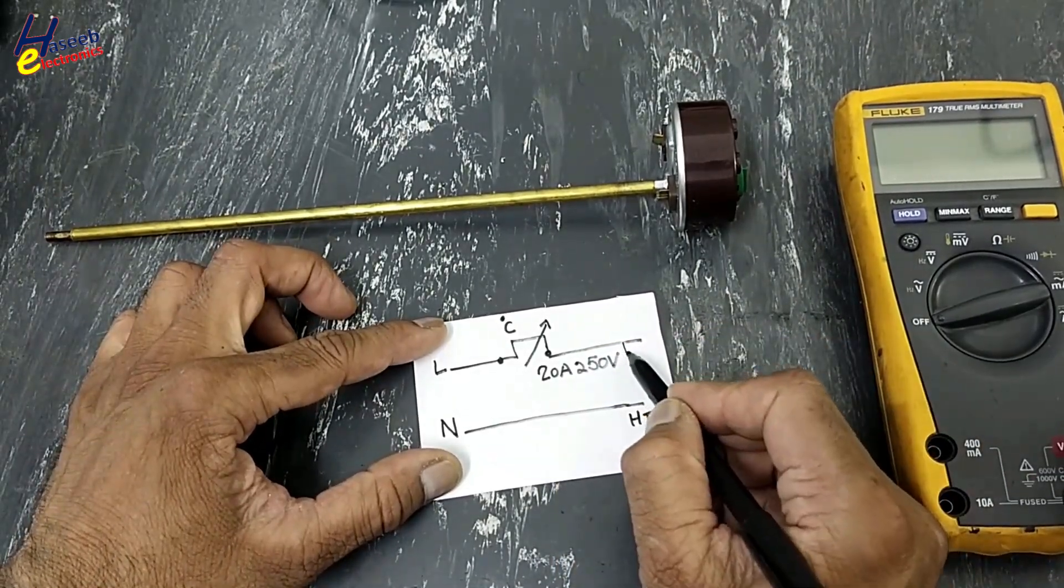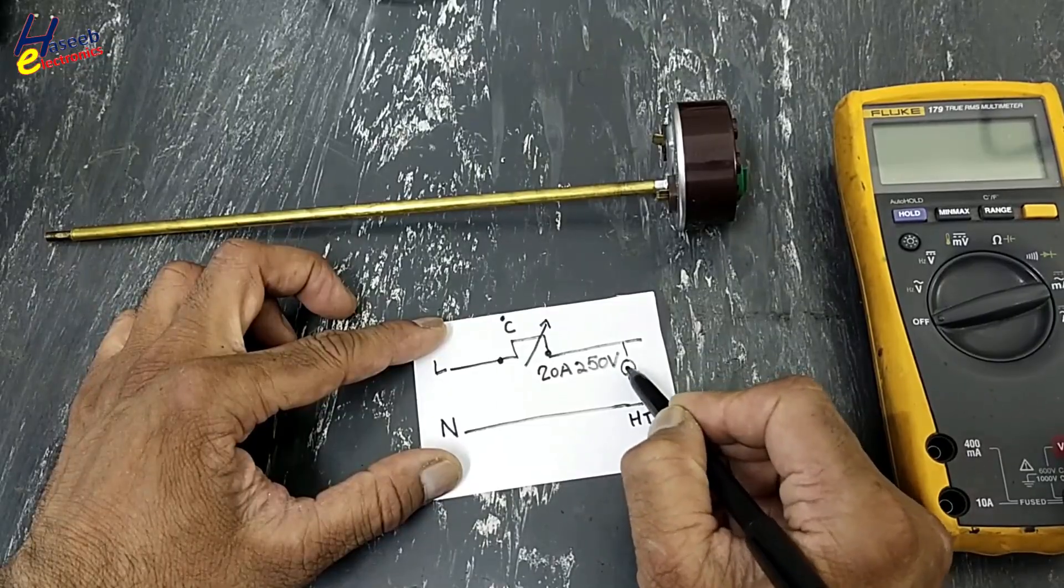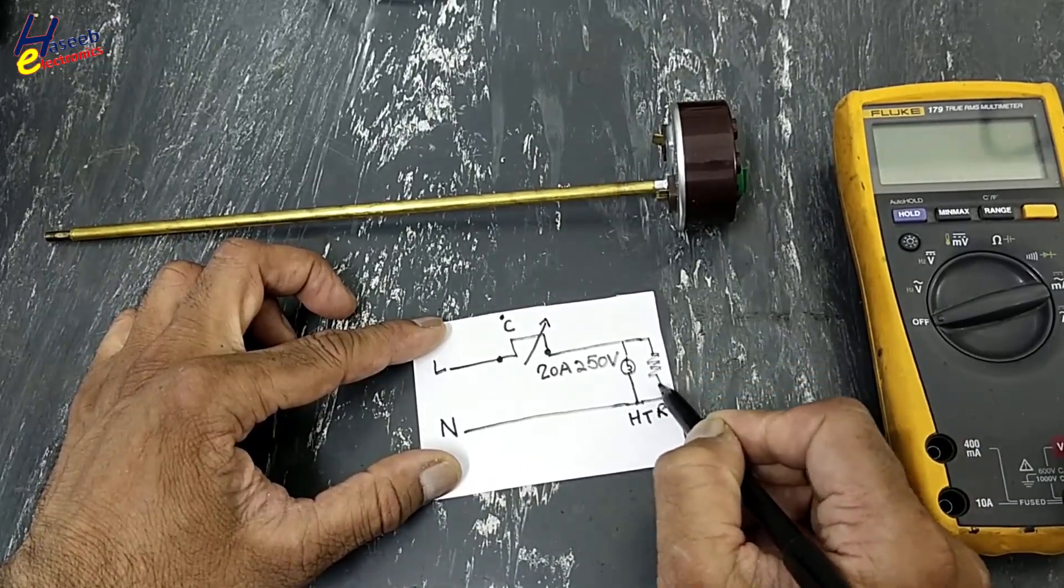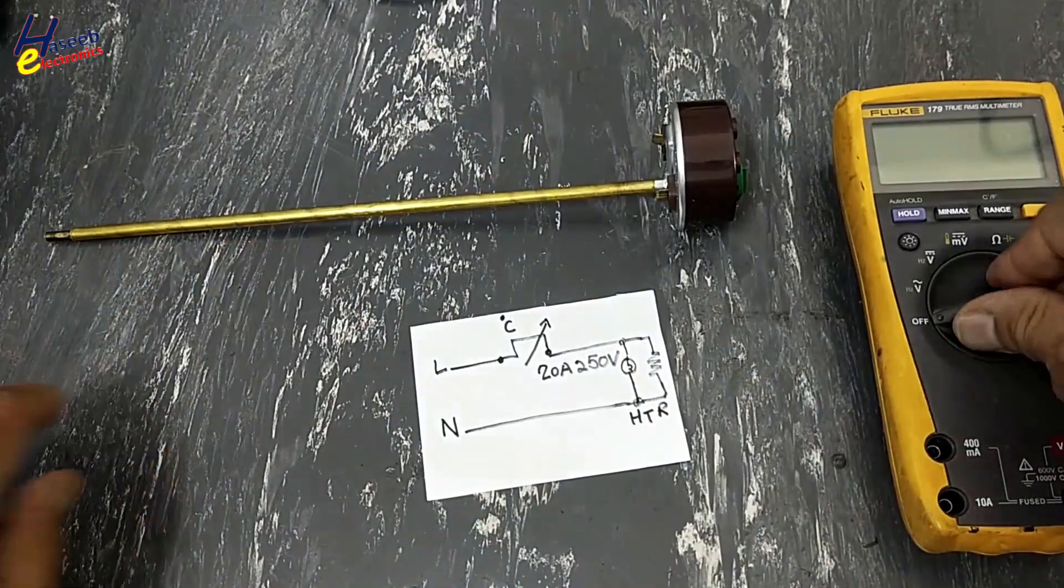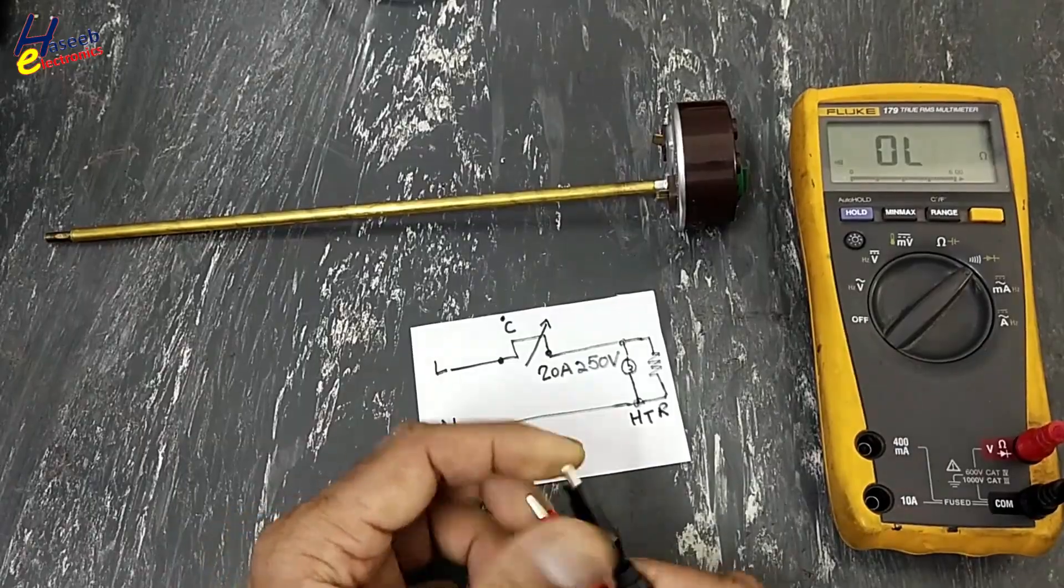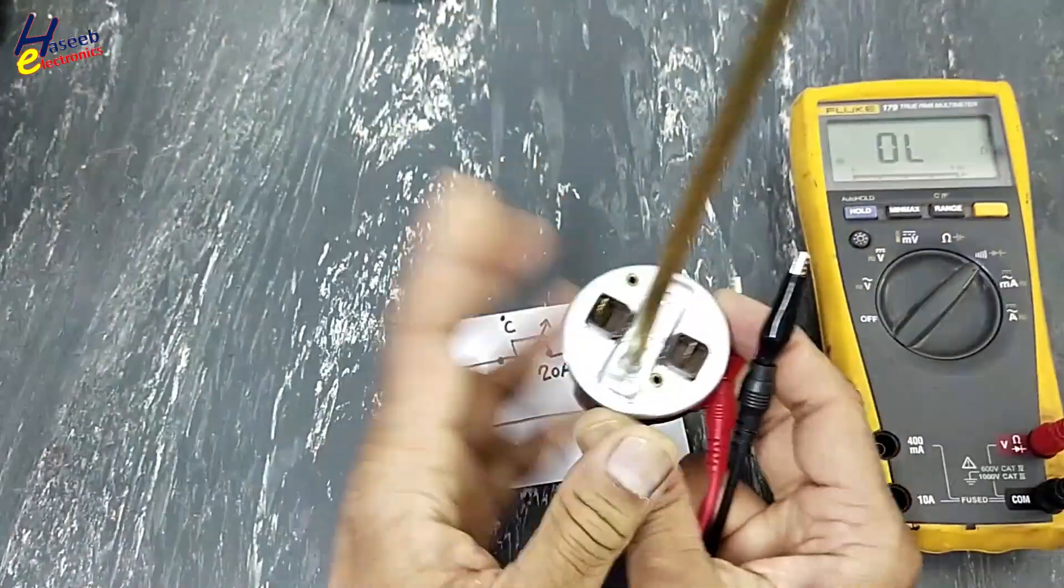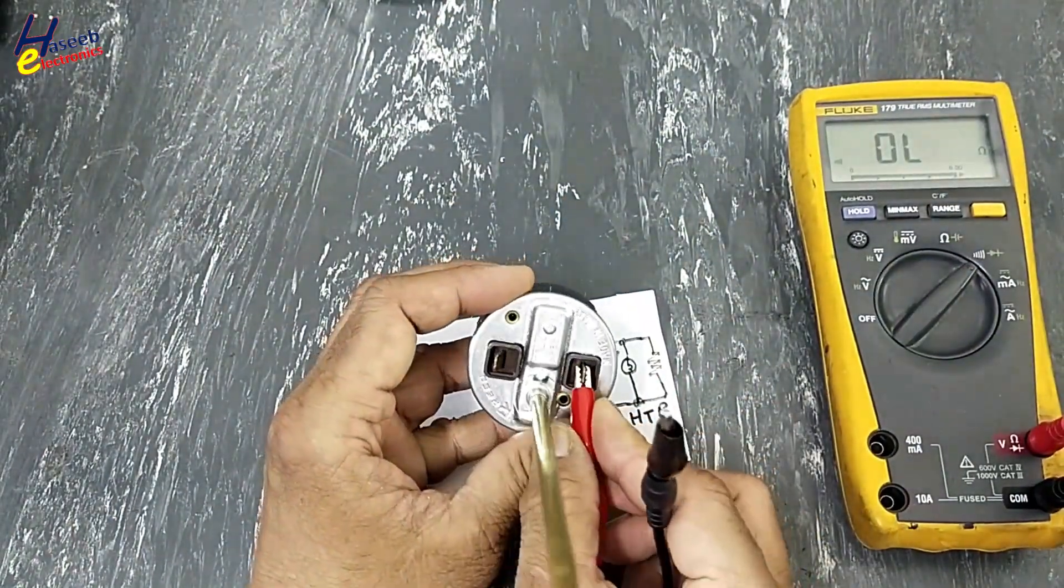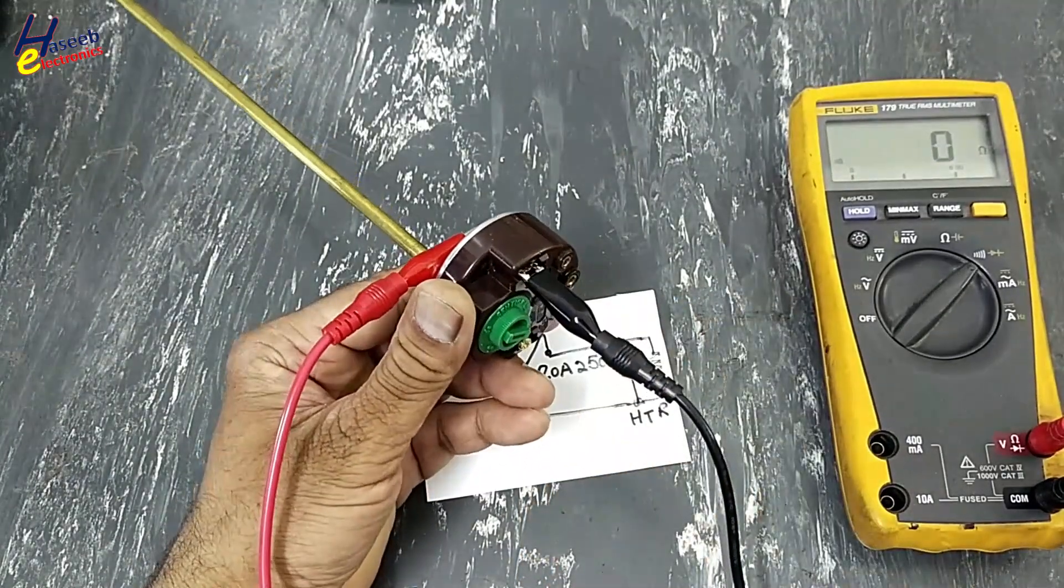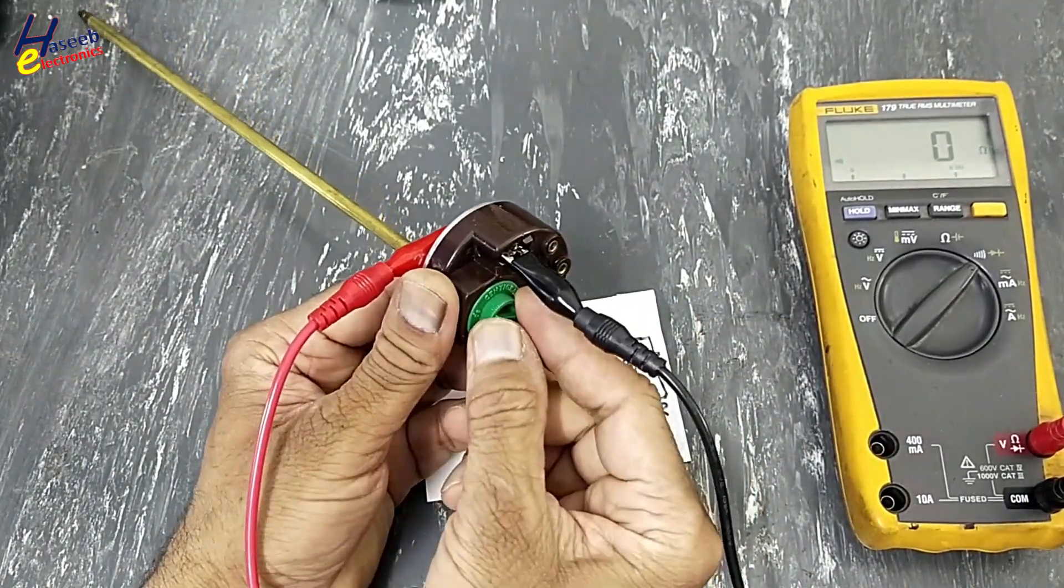In the same point, here is neon, here is heating element. Set multimeter to continuity. We will connect at this terminal and this terminal. It has given continuity. We will adjust this thermostat adjustment.